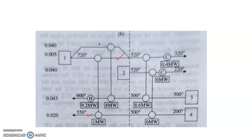Below the pinch, since there are no Cp violations and no stream-count issues, matches are placed directly: stream 1 with stream 3 exchanging 8.6 MW, stream 2 with stream 4 exchanging 6 MW, with the remaining 6.4 MW removed as cold utilities on streams 1 and 2. We then return to finalise CpA above the pinch.